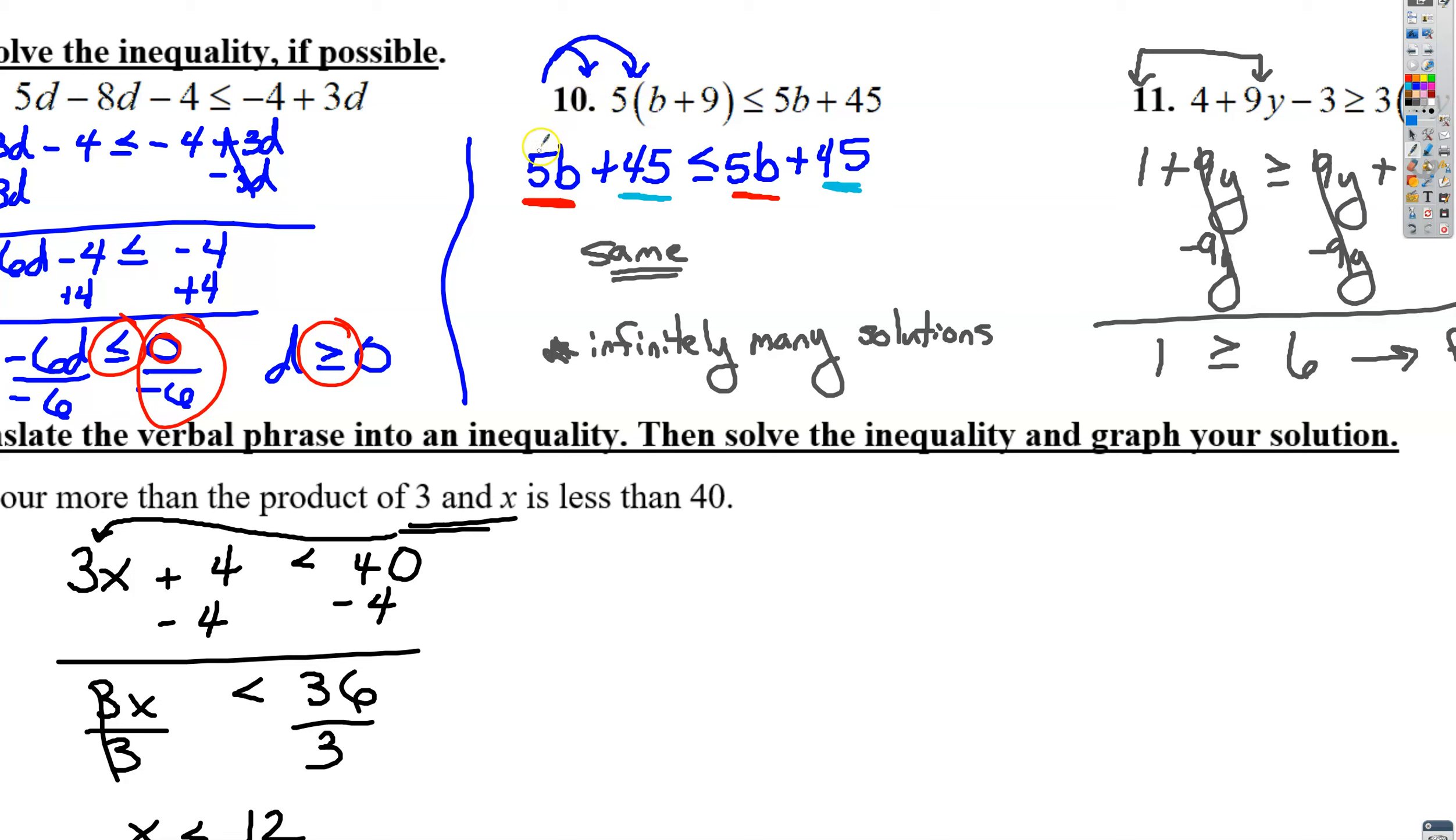All right. On number 10, you want to distribute first. You end up getting 5b plus 45 is less than or equal to 5b plus 45. It's the exact same thing on both sides. Since this symbol was a less than or equal to, this ends up being a true statement because 5b plus 45 is equal to 5b plus 45. Since that's a true statement, we get infinitely many solutions or all real numbers.